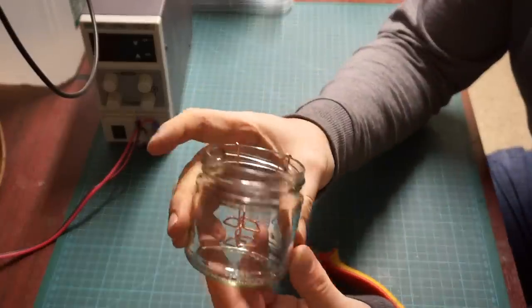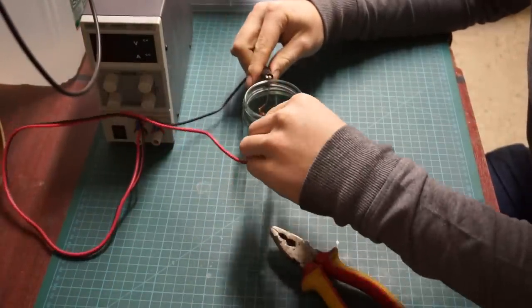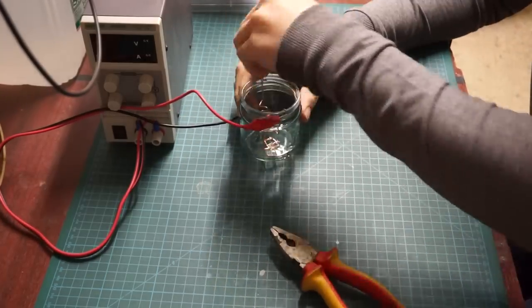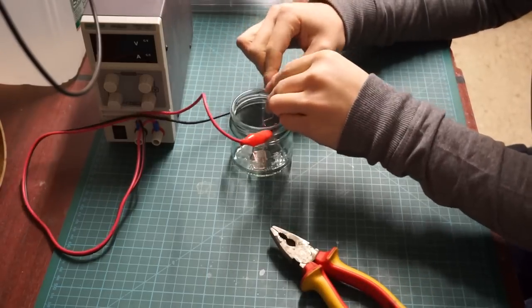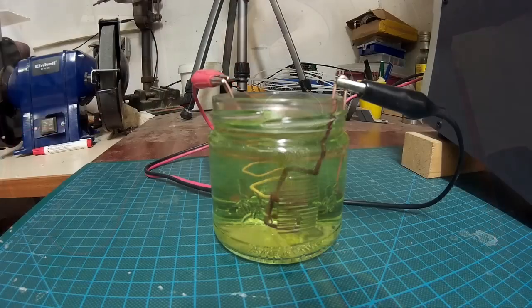You may not have an adjustable power supply on hand but chances are you can find some AA batteries for this project. Four of those would give you approximately 5 volts depending on their state of charge. Using the lab power supply made for a more reproducible setup though.